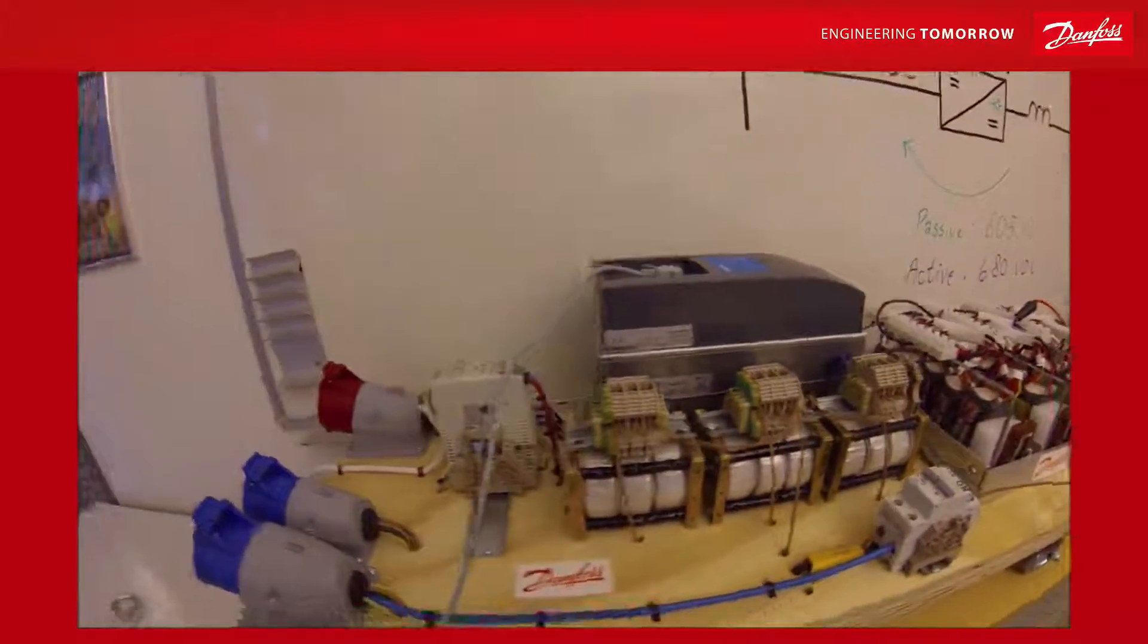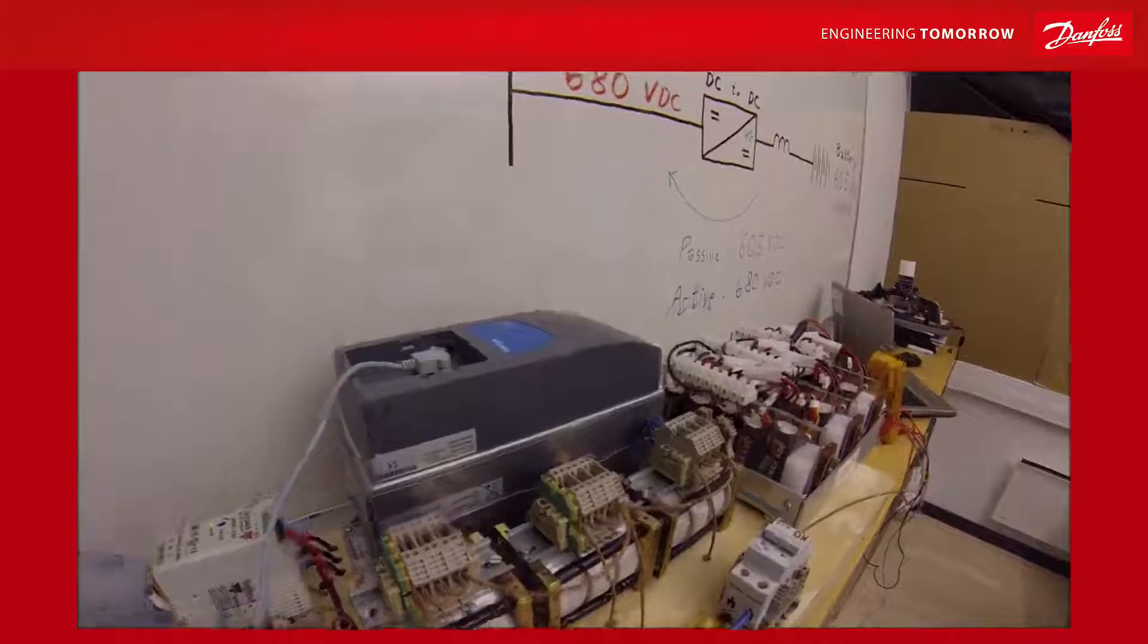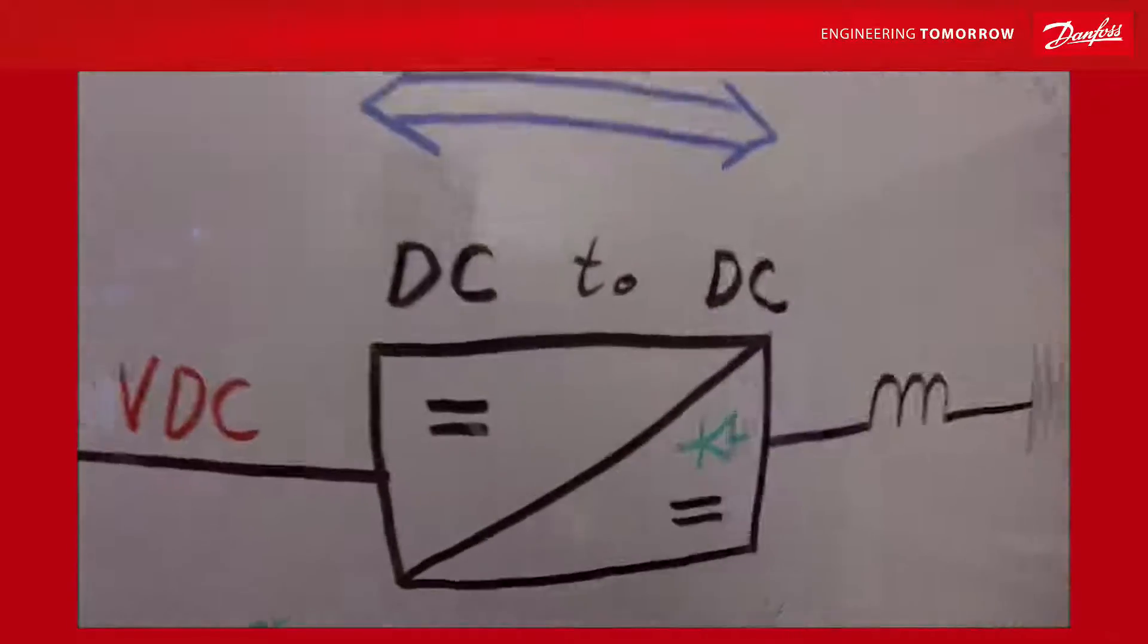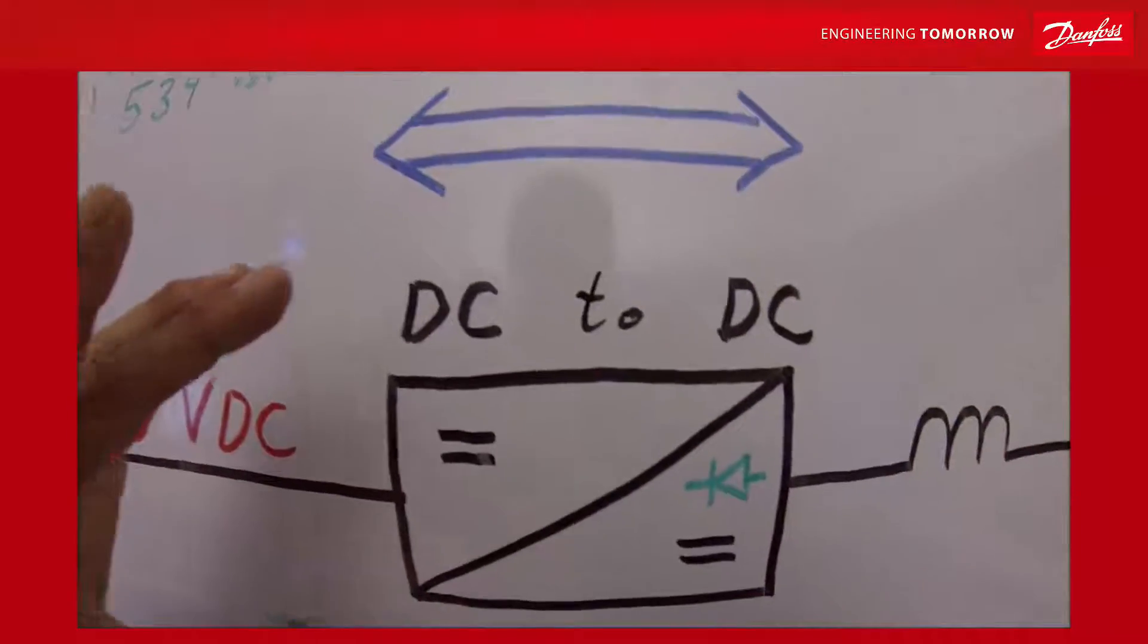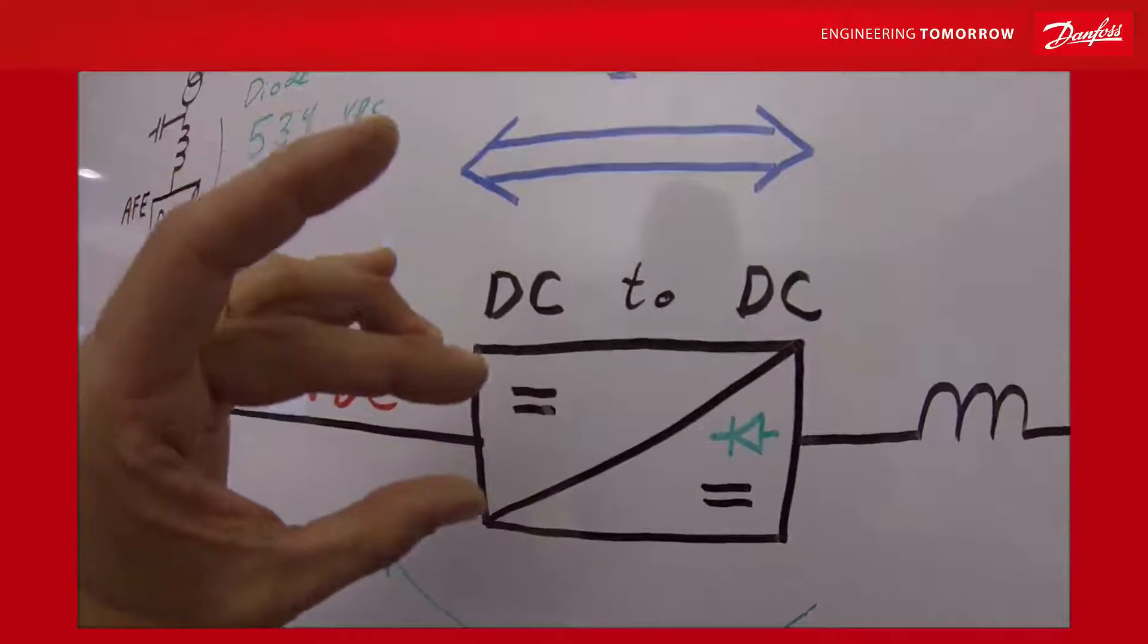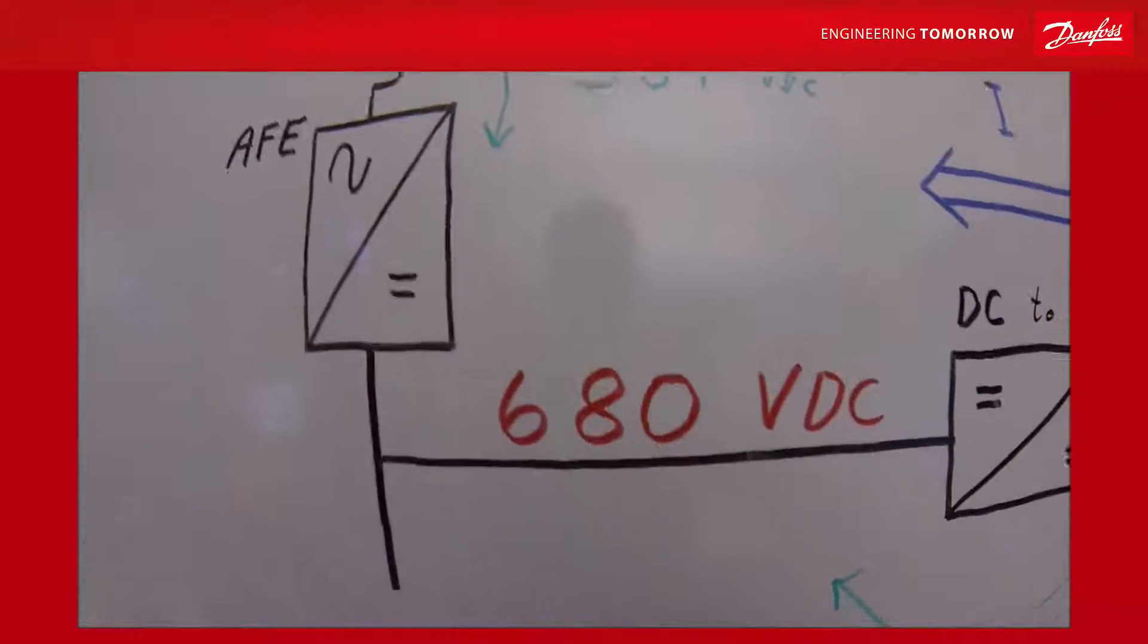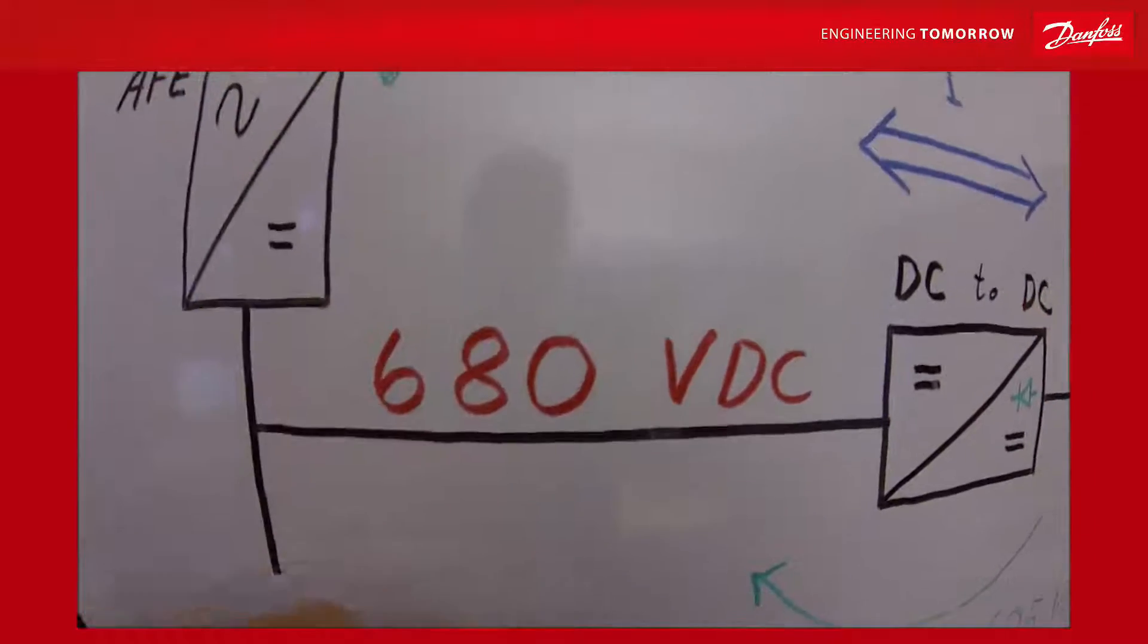We can also produce 680 volts from this place. And then we will use the over voltage and under voltage controller in the DC to DC converter to make a narrow window for the DC voltage to match the active front end. Load sharing is done with load drooping.